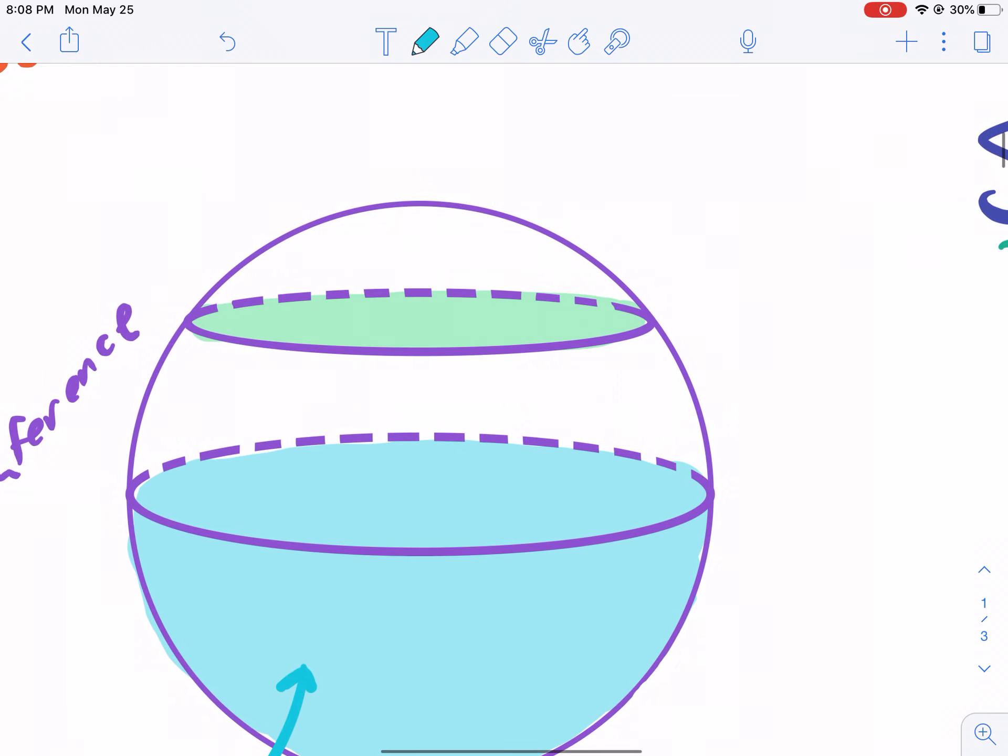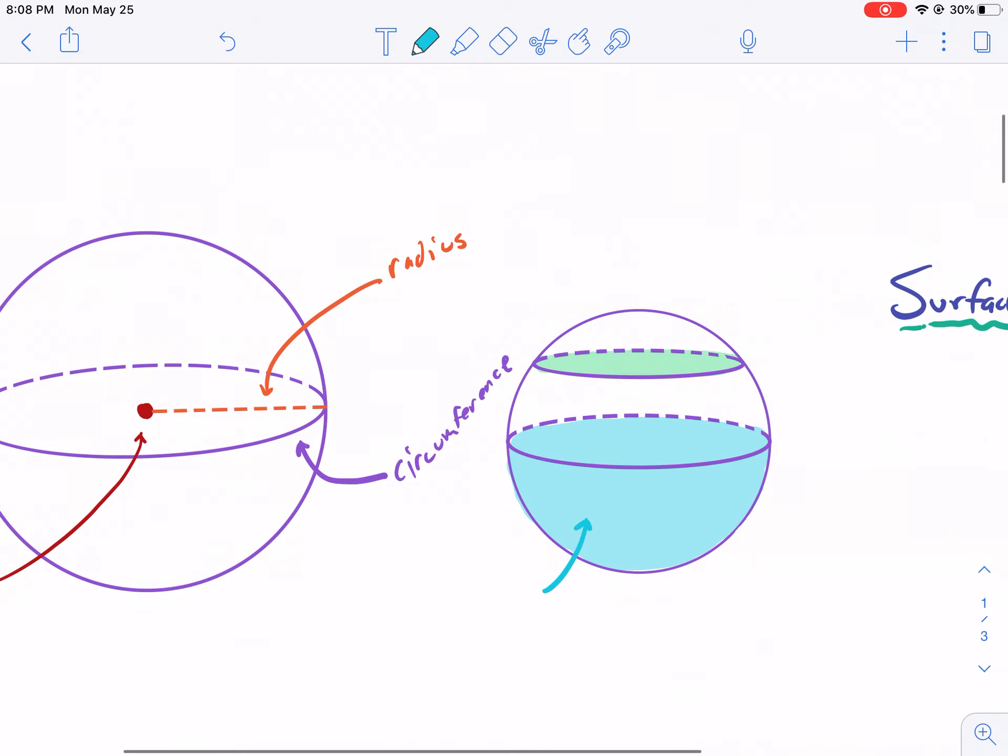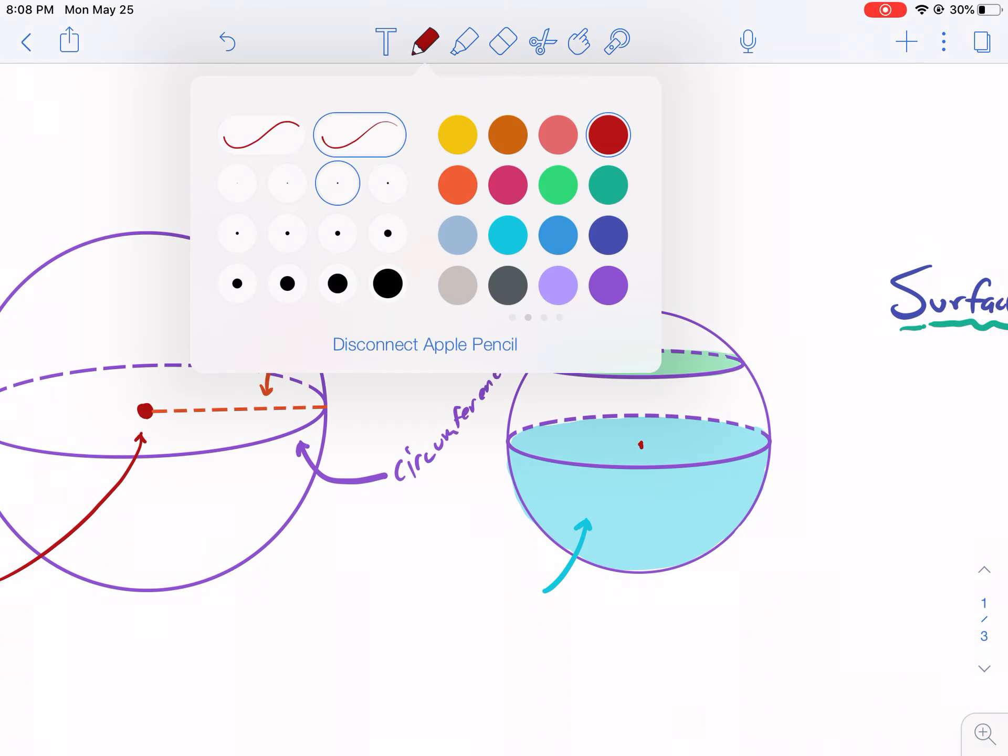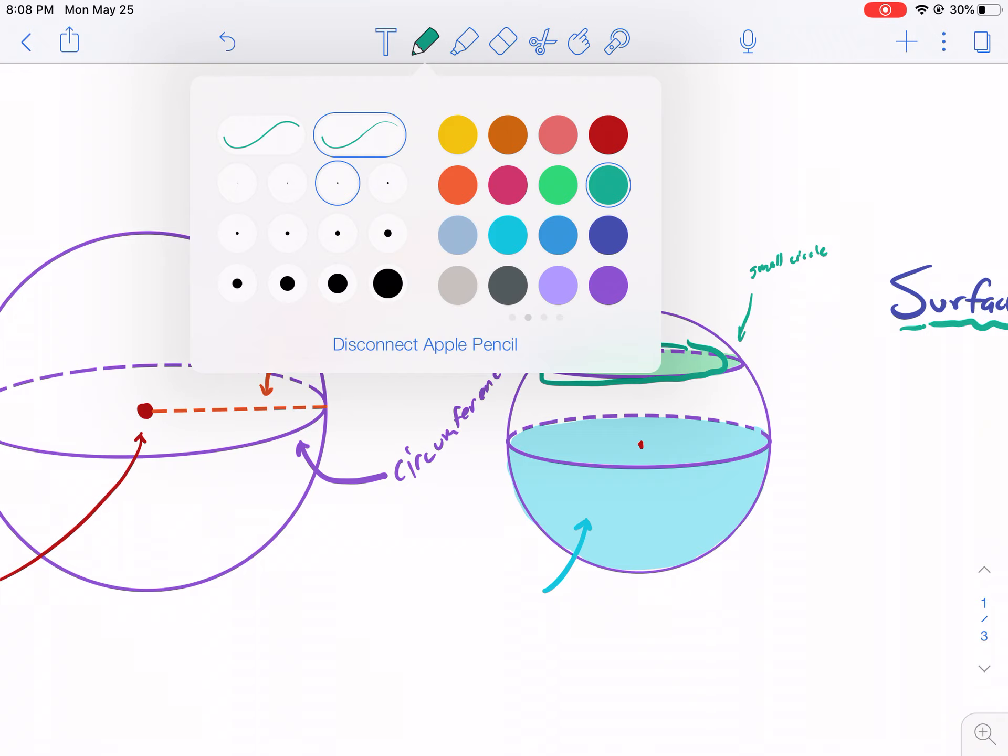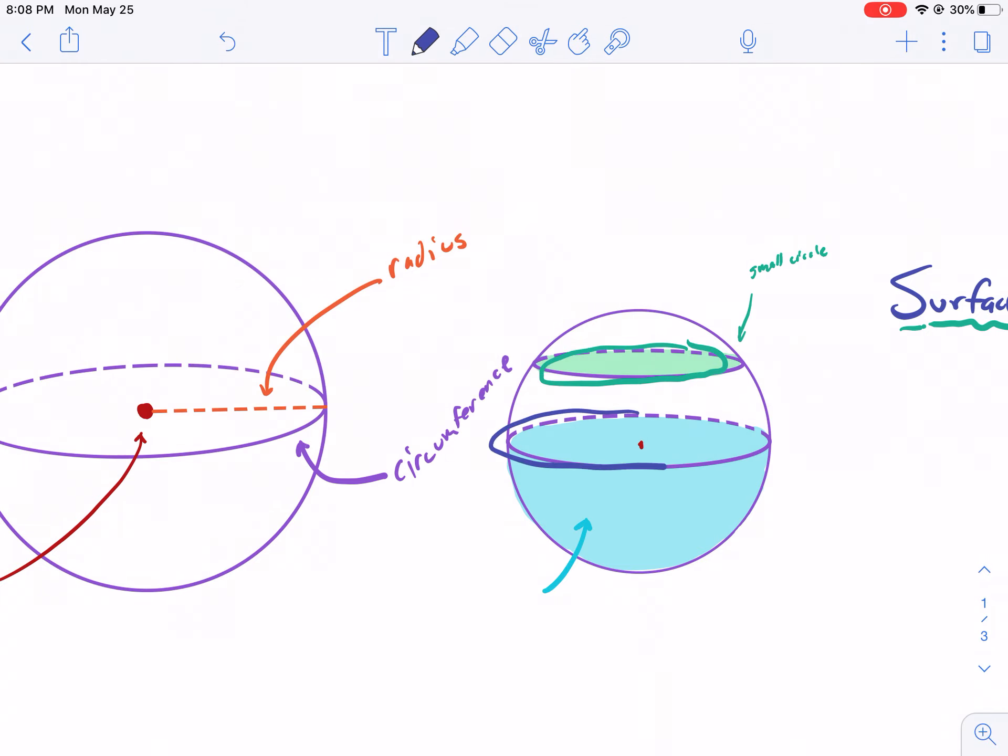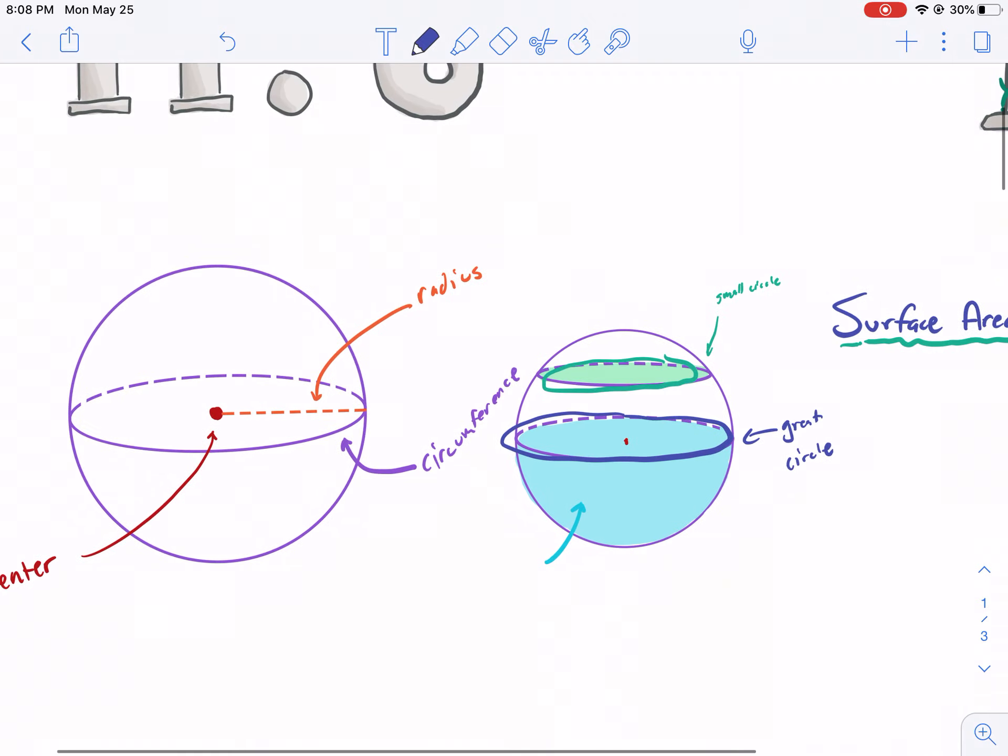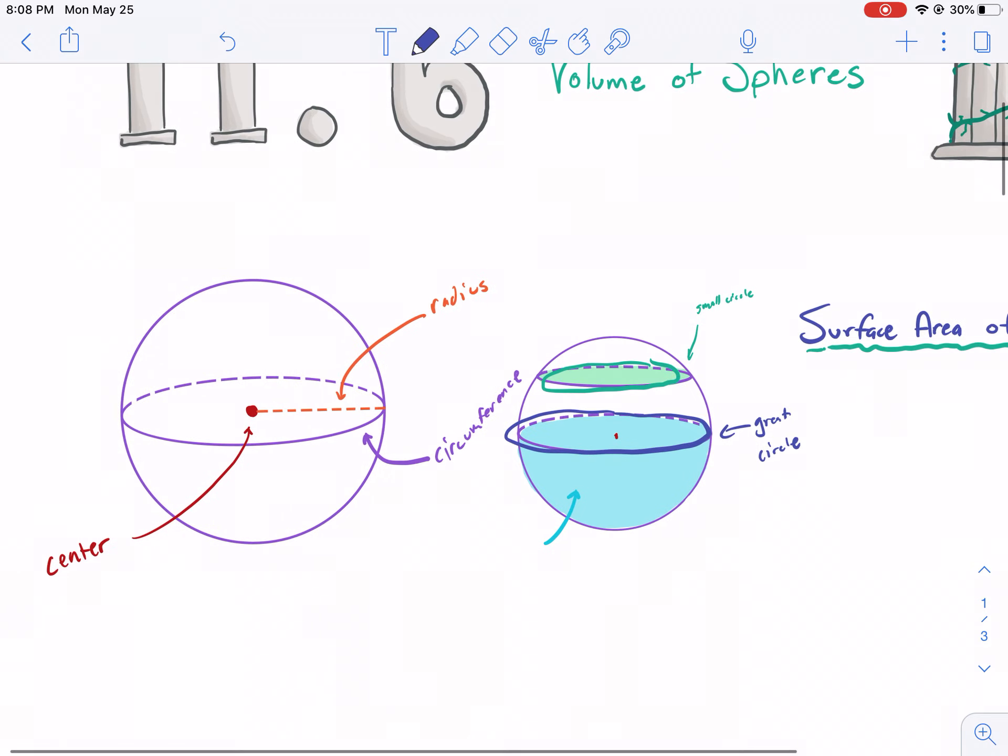This orange slice that doesn't go through the diameter, through the center of the sphere, is called a small circle. So that's a small circle, and that would be the outline here, that little ring. Whereas if you were to cut something like this, this would be called a great circle. So the great circle is the largest circle, that cross-section of a sphere.